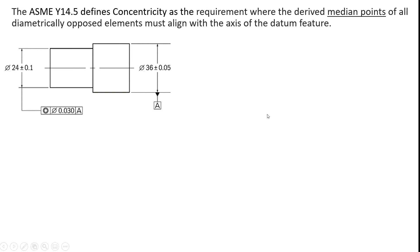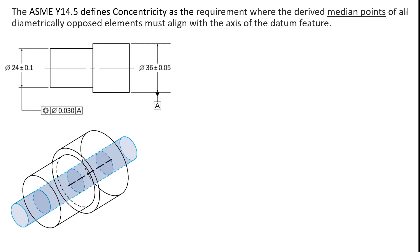That does have the concentricity callout on it. Notice that there is a diameter symbol here with the tolerance. That diameter symbol states that the shape of the tolerance zone will be a cylinder, and the size of that cylinder will be 30 microns.